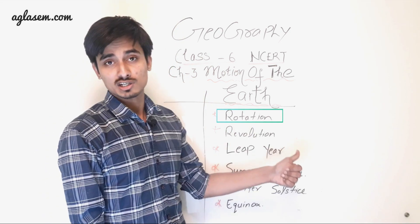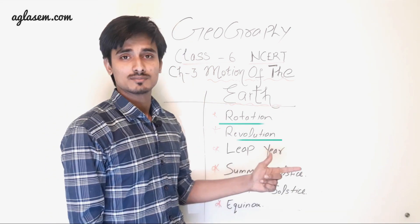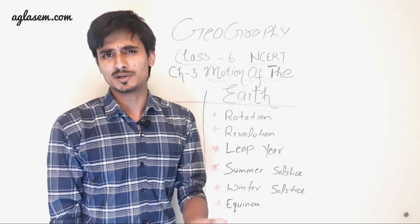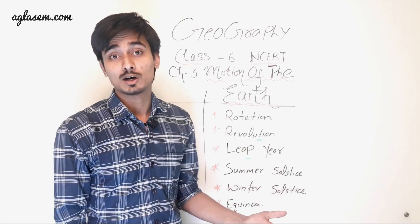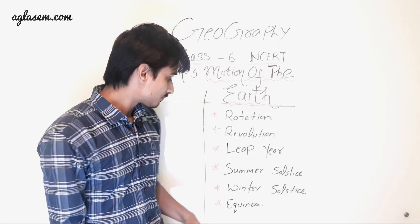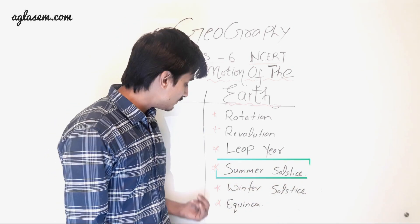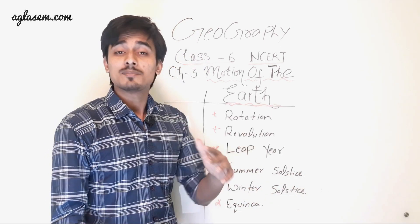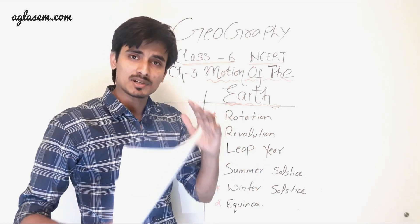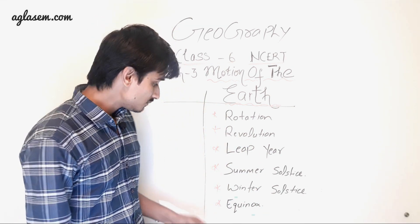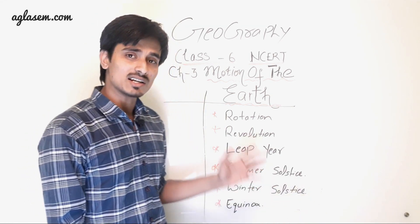First of all, rotation, then revolution. Basically, these are two motion types. Then you will learn what is Leap Year, then Summer Solstice and Winter Solstice. What difference is in this chapter? Then Equinox. These are all things you will learn in this chapter.